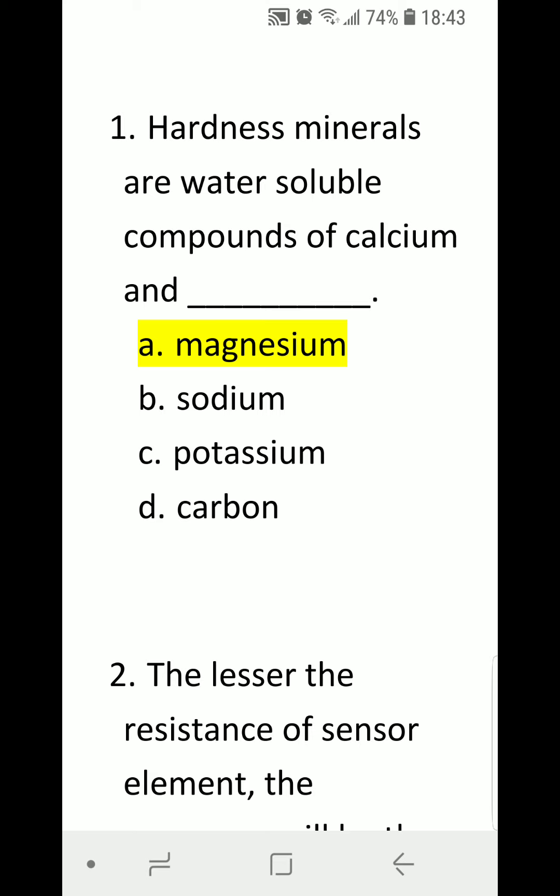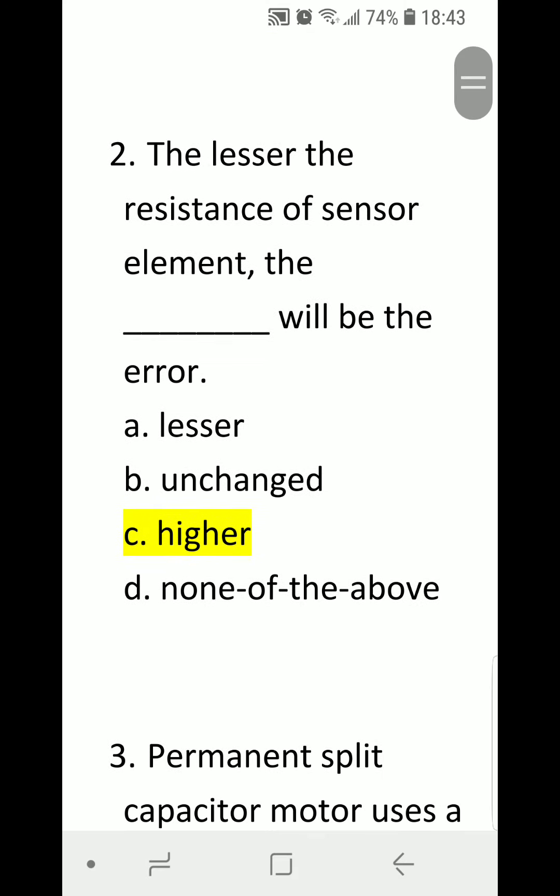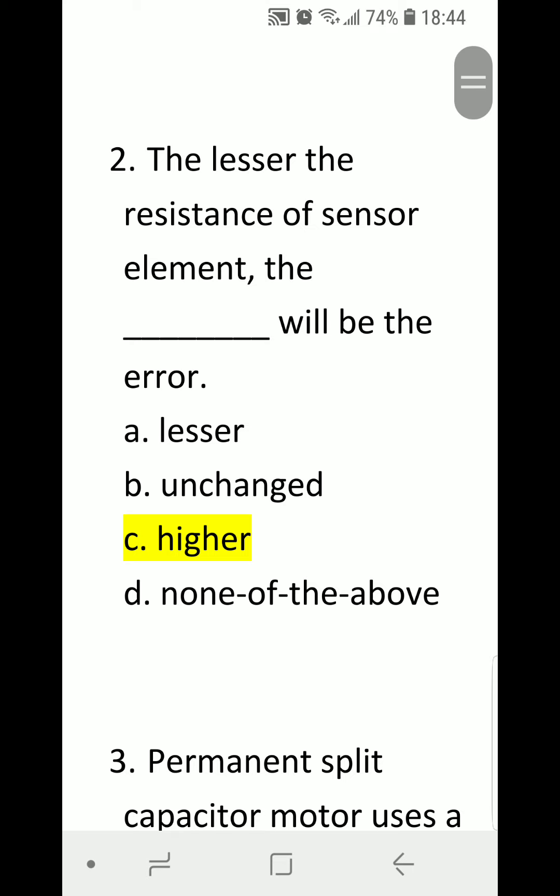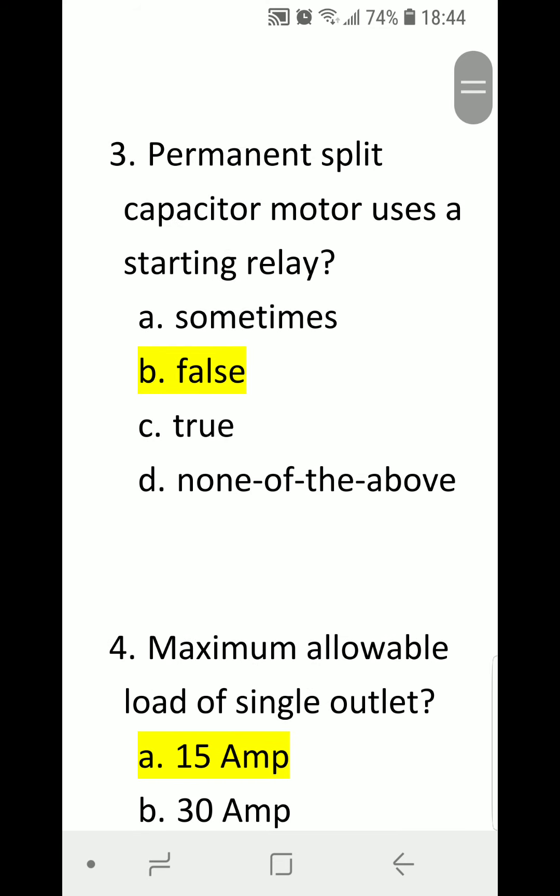Number two: The lesser the resistance of sensor element, the blank will be the error. A. lesser, B. unchanged, C. higher, D. none of the above. Correct answer is C. higher.